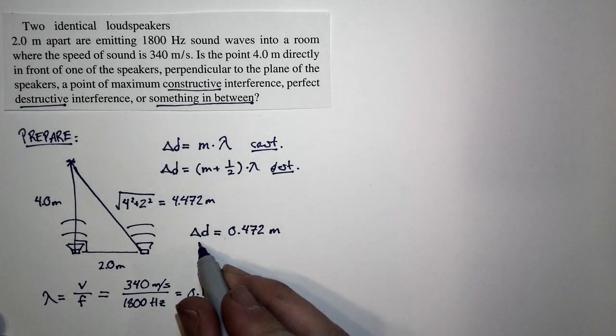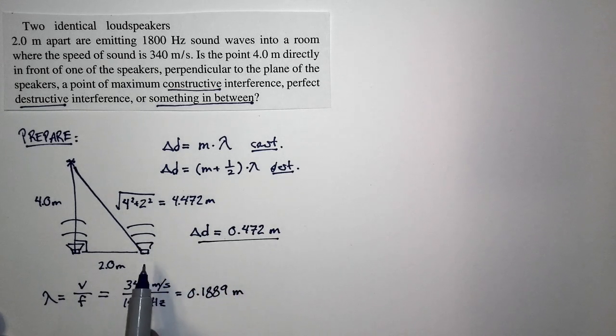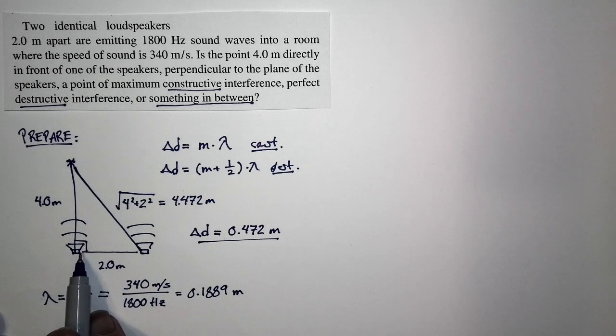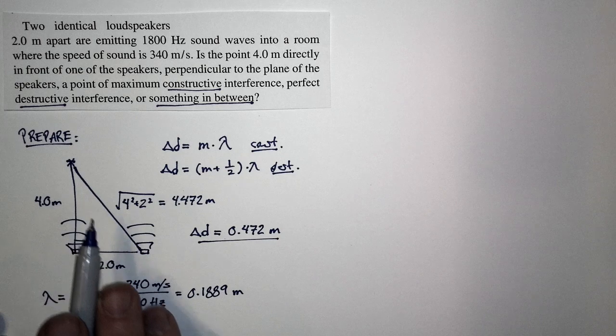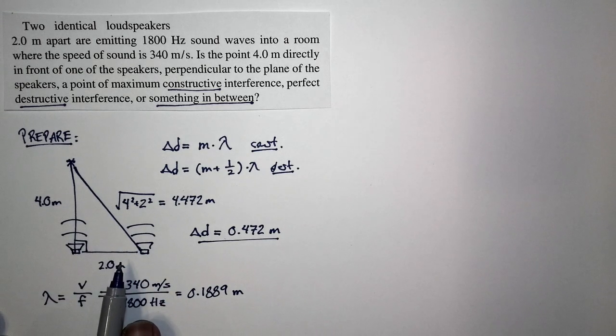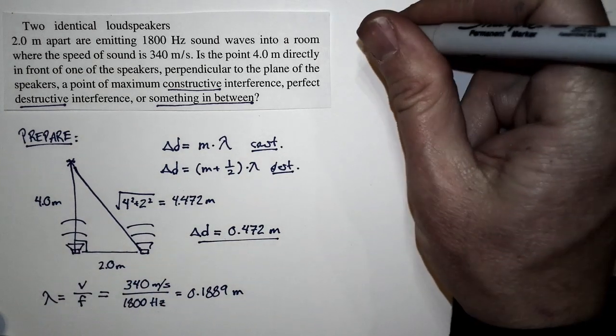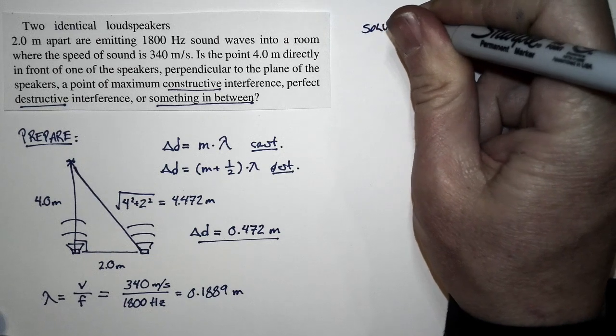So this is the difference in distance from this speaker and this speaker at this point. This is the wavelength of sound. The question is, when the sound from here and here meet at this point, do they do constructive or destructive interference? Let's solve and figure that out.